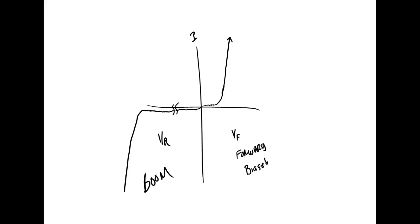For the first part of the lab, procedure steps one through seven, you're going to measure VF and current and set up the VI characteristic curve. When you get to step seven, that's where we do the reverse bias portion. This device breaks over at 100 volts, so the original table values of 5, 10, and 15 volts are no good — we can't break it over at those values.